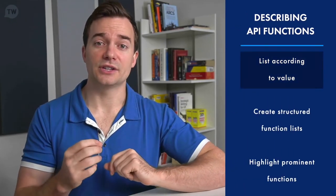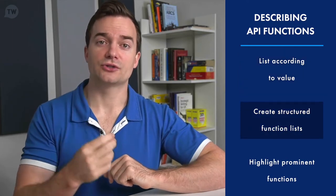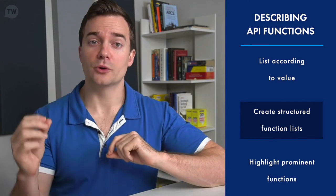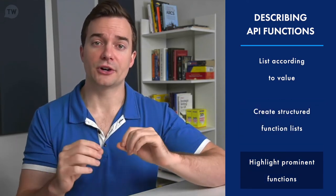API technical writers have three responsibilities here. First, they have to list the functions according to the value for the end user. Second, they have to create structured lists that explain functions in order, usually from the most to least prominent. And third, they have to highlight the more prominent functions to retain developer focus in the product.